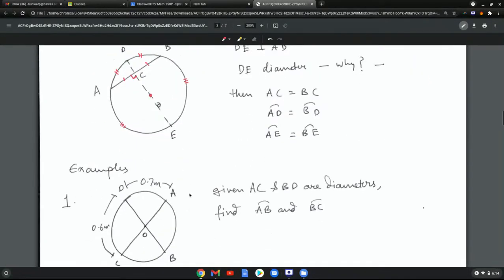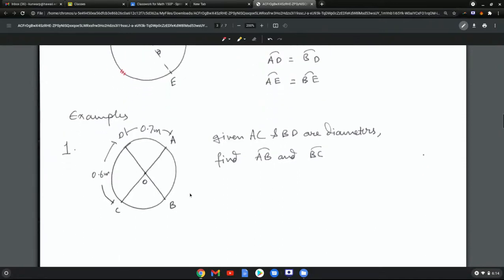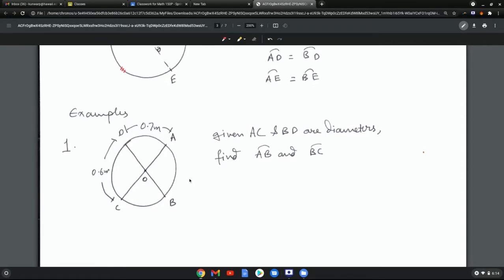Let's look at some examples – one example, and then I'm going to do a separate video with more examples. Given AC and BD are diameters, find the arc AB and BC. Now one simple way to do this is to observe...